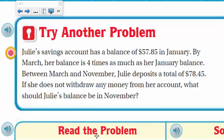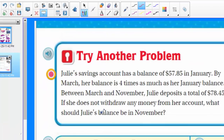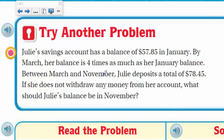Let's try another problem. Julie's savings account has a balance of fifty-seven dollars and eighty-five cents in January. By March her balance is four times as much as her January balance. Between March and November, Julie deposits a total of seventy-eight dollars and forty-five cents. If she does not withdraw any money, what should Julie's balance be in November? A couple of key vocabulary words: 'balance' means how much money is in the account, and 'withdrawal' means to take money out.